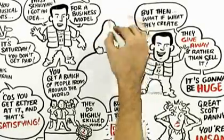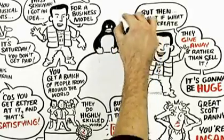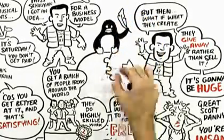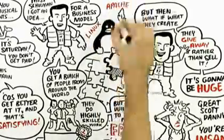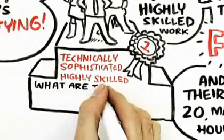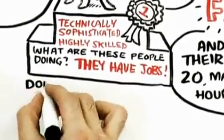But what do you have? You have Linux powering one out of four corporate servers in Fortune 500 companies, Apache powering more than the majority of web servers, Wikipedia. What's going on? Why are people doing this? Why are these people, many of whom are technically sophisticated, highly skilled people who have jobs? They have jobs.